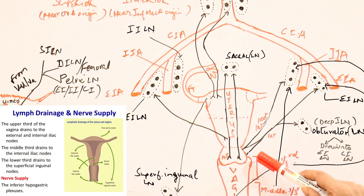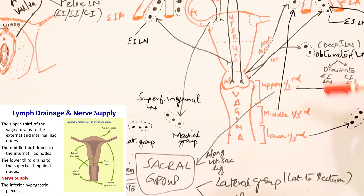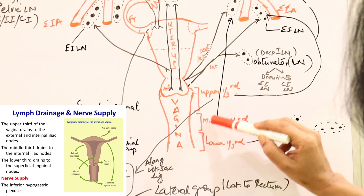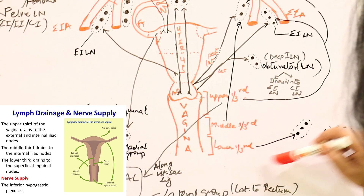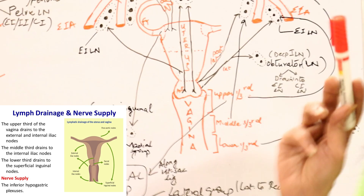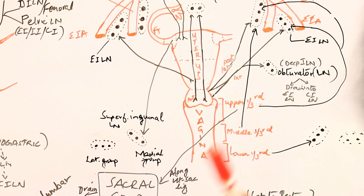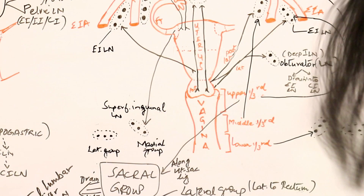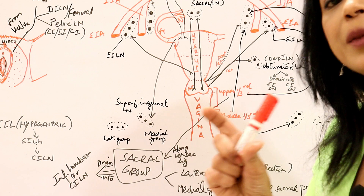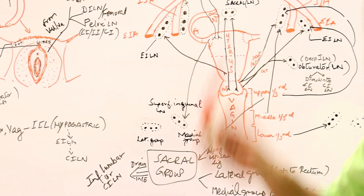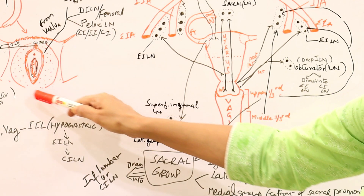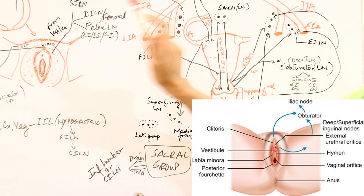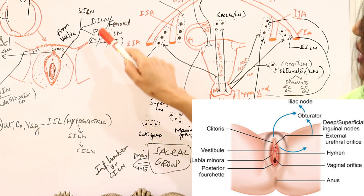Coming to the vagina — if you divide it into three parts: upper, middle, and lower — the upper one-third drains straight into the external iliac. The middle one-third drains into the internal iliac. The lower one-third drains to the superficial inguinal lymph nodes. The vulva drains straight to the superficial inguinal as well.